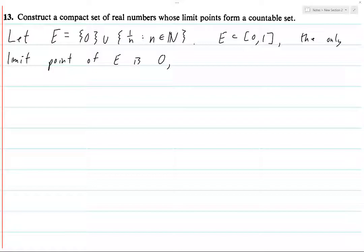The set of limit points does not include isolated points. If we look at 1 over n where n is in the natural numbers, all of the points in the set itself are isolated points. However, this set does have a limit point, and that limit point is 0.